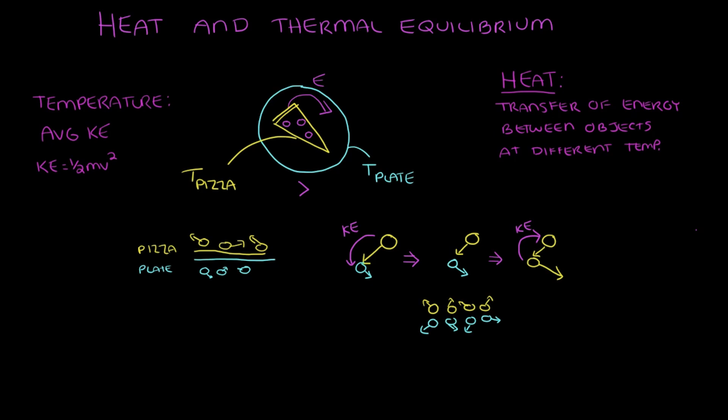You know when you leave your pizza on the counter too long and you come back and it's cold? If you were to actually measure the temperature of the pizza on the plate, they're going to be the same. And we now know that heat transfer only occurs when the temperature is different between objects. So when the temperature is the same, no heat is transferring. And this is what is defined as thermal equilibrium. Thermal equilibrium occurs when there is no heat transfer in the system.